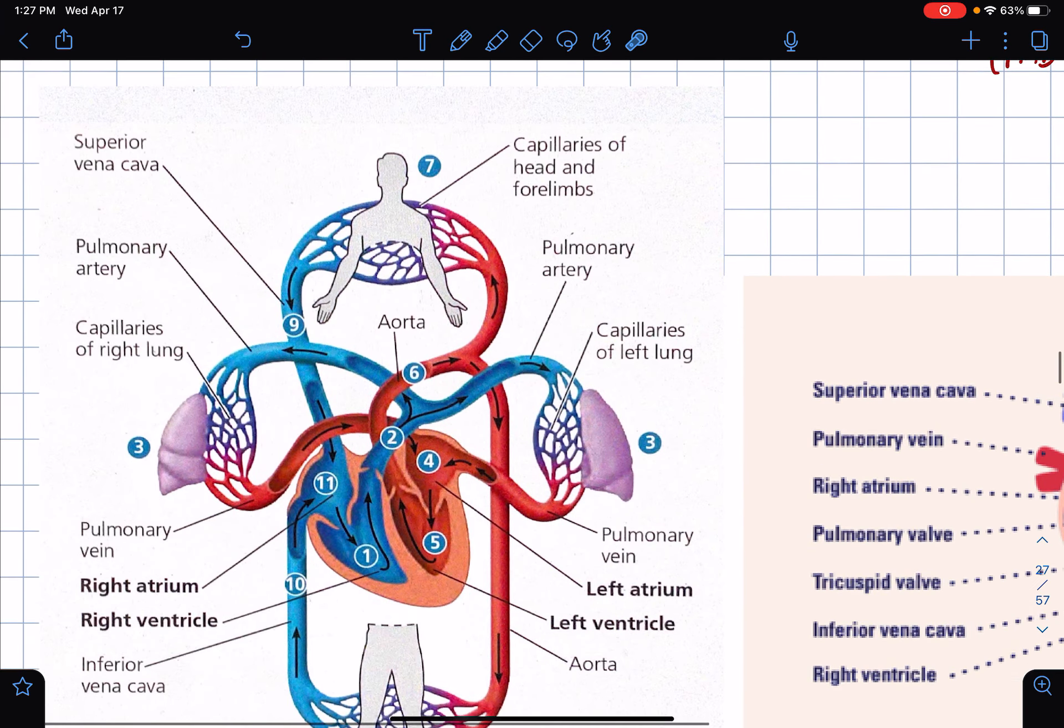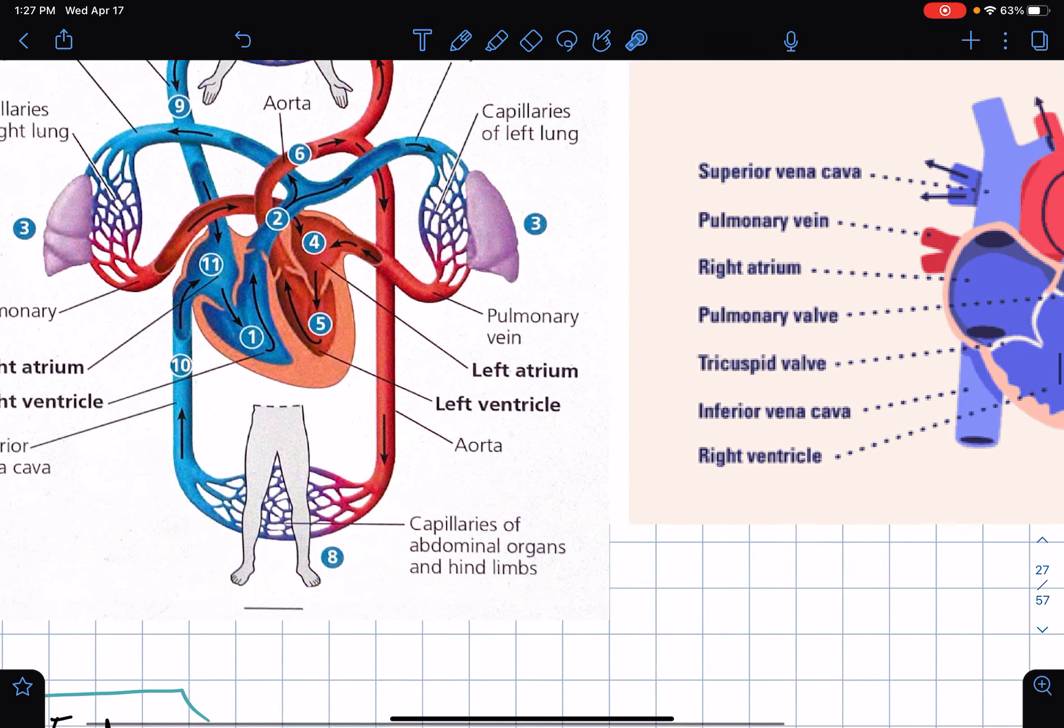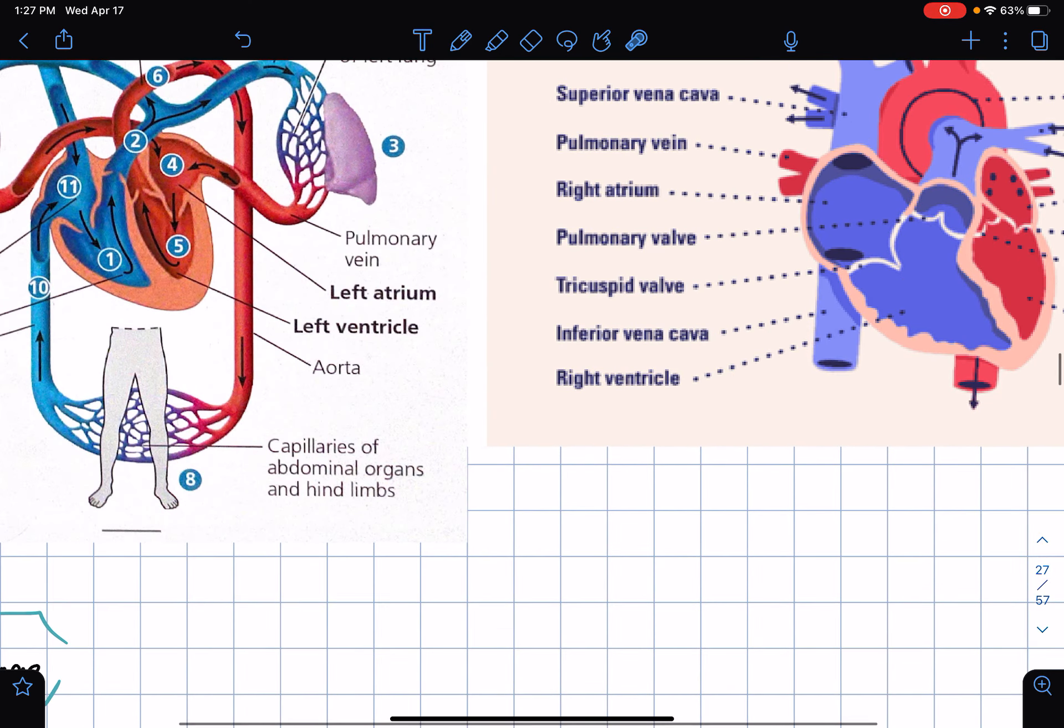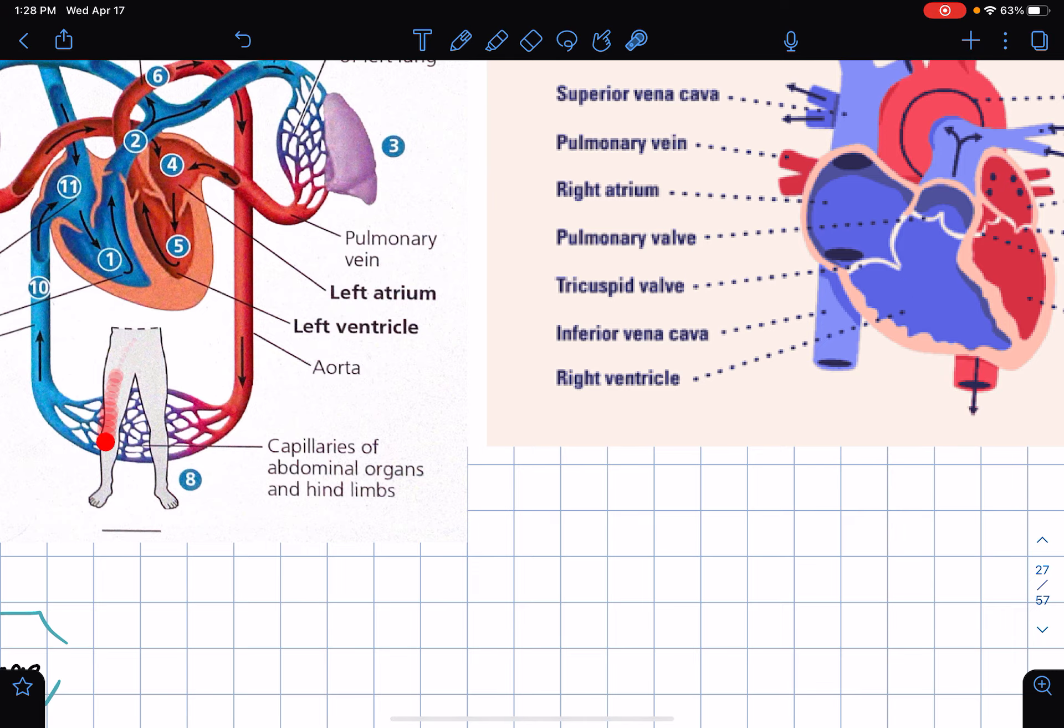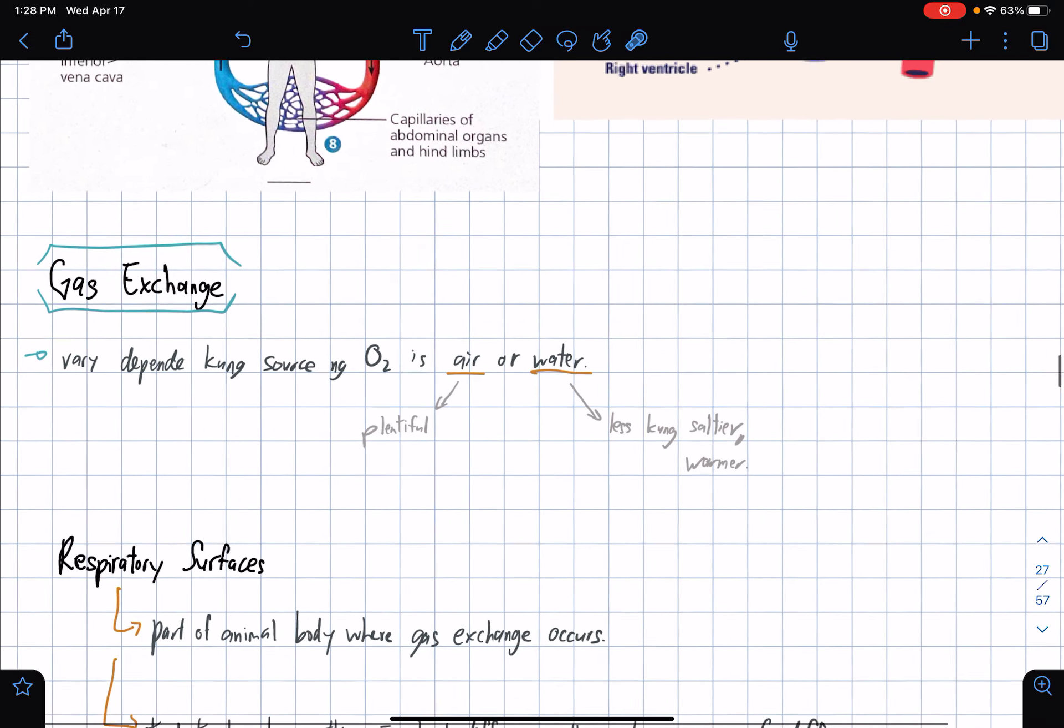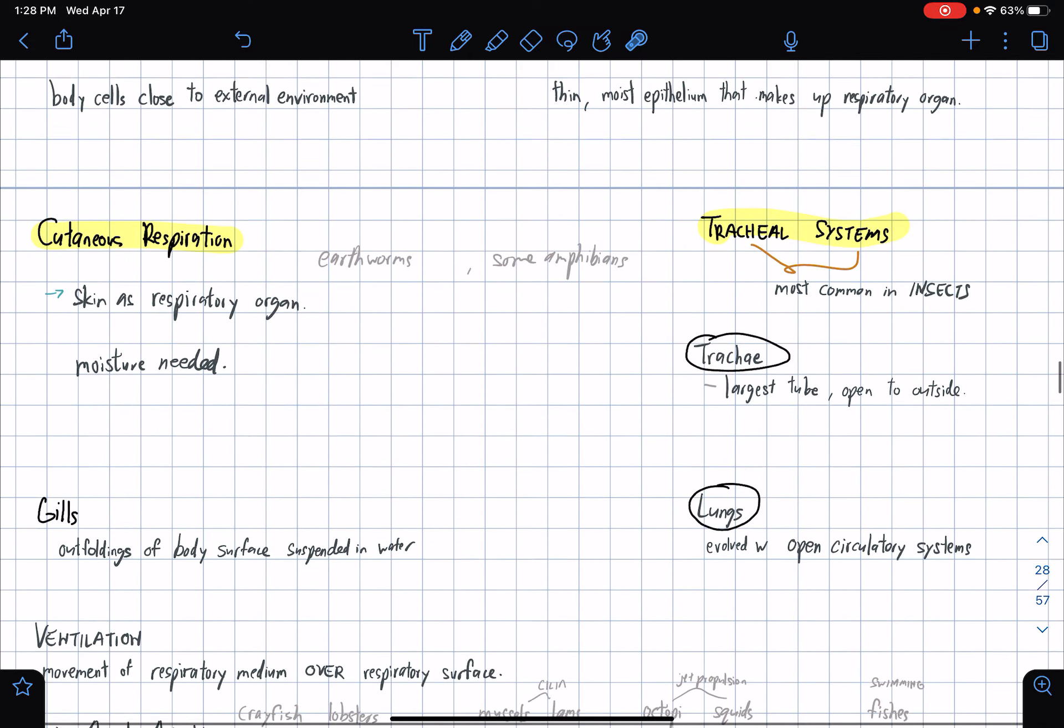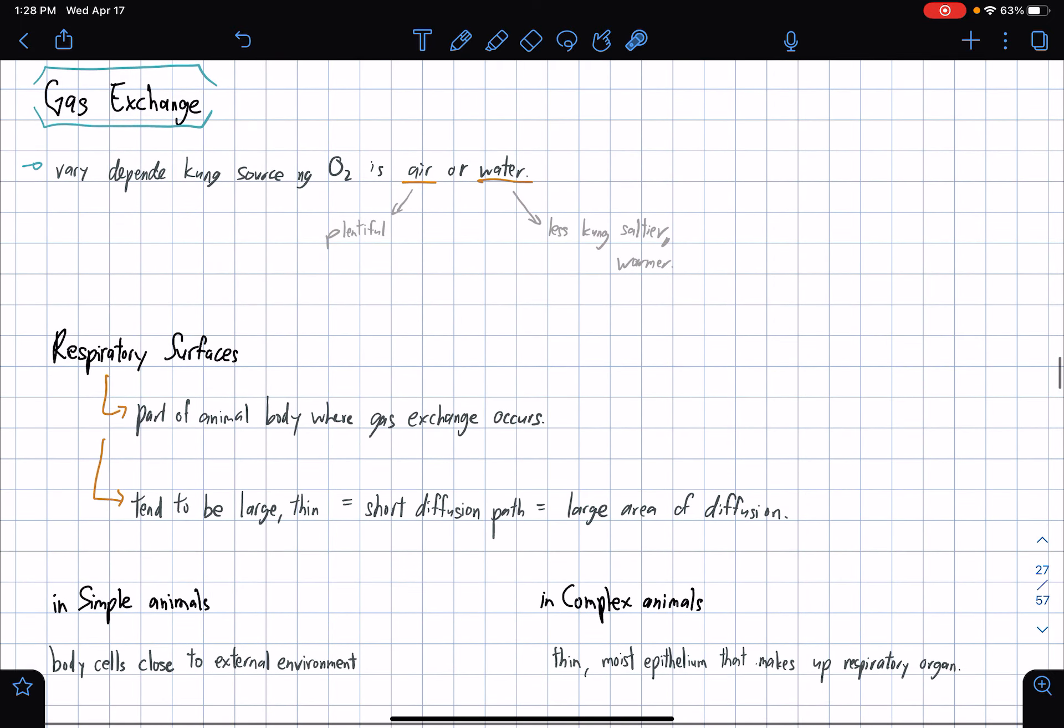This part of the aorta is the source of blood for the head and the forelimbs, our arms. The aorta from below is responsible for delivering blood to the lower region, the inferior region. We're done with the circulatory system.